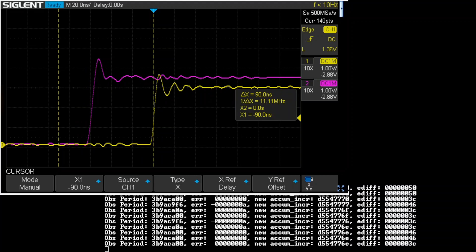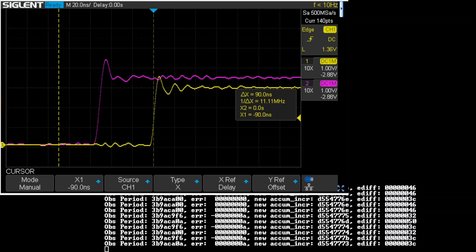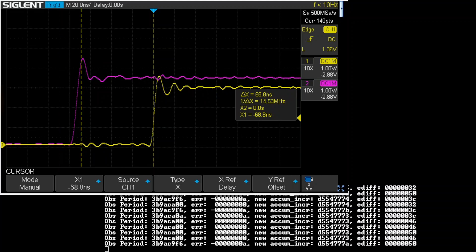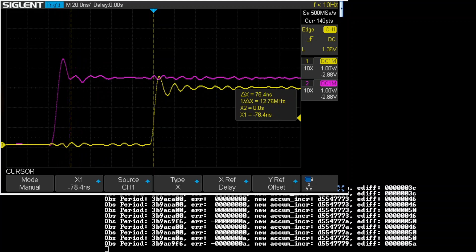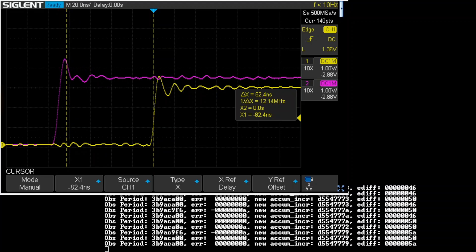The bottom shows the output from the PICO RV32 core on the FPGA. The last column, labeled ediff, shows the difference between the timestamps. The value is in hex. That value should match the horizontal difference that we see on the scope between the two signals. Let's skip ahead to an interesting spot and freeze the video.